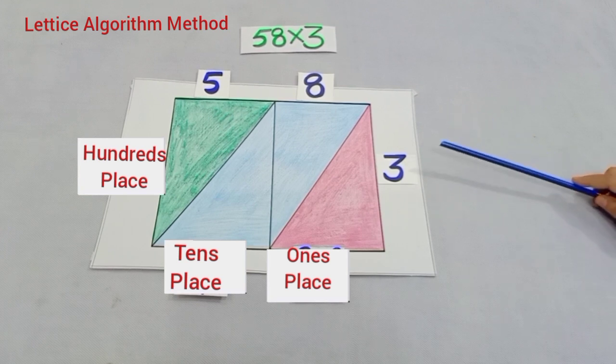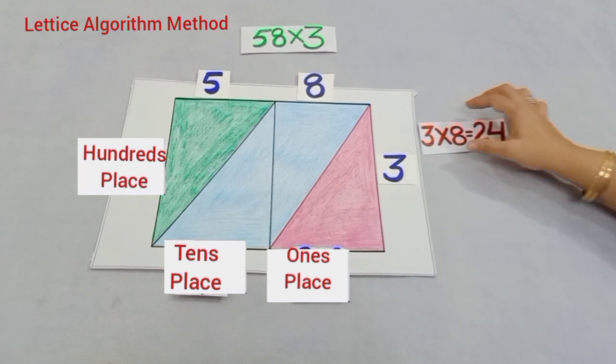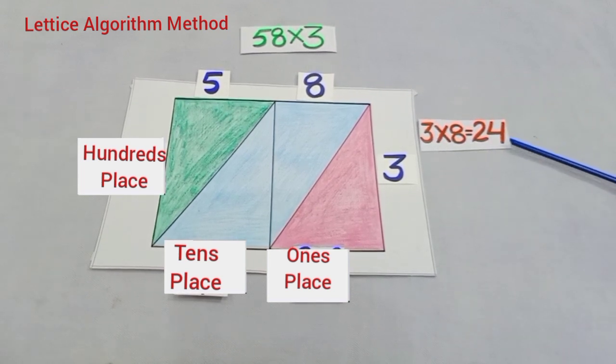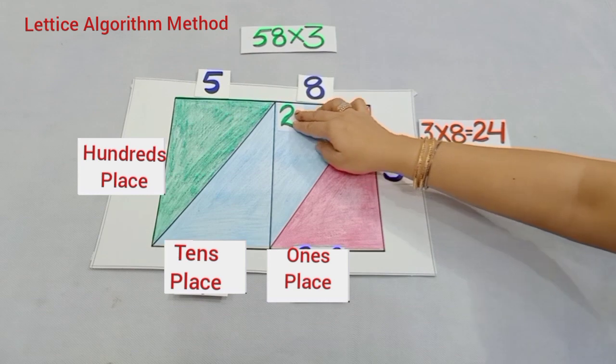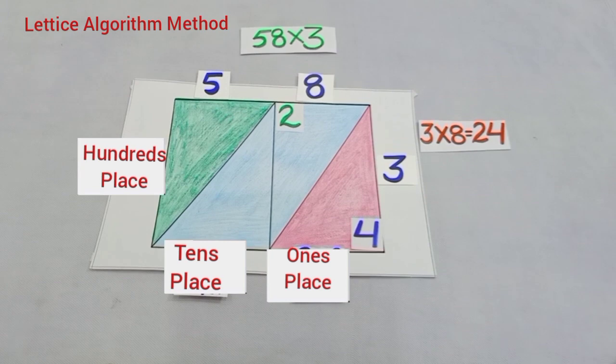Firstly, we will multiply three by eight and we know three eights are twenty-four. Now, we have to write twenty-four here. Firstly, we will write two like this and four here like this.